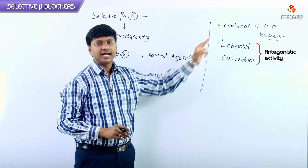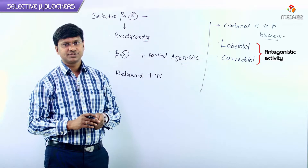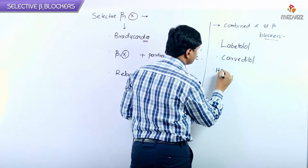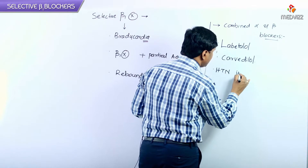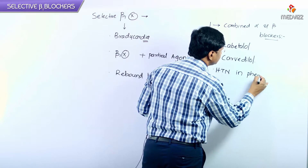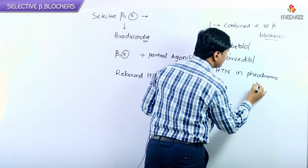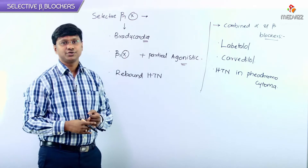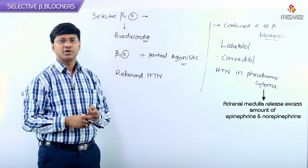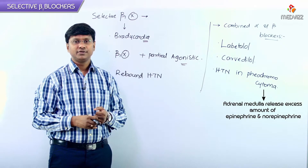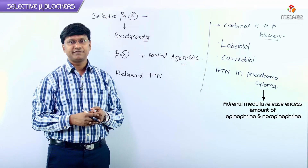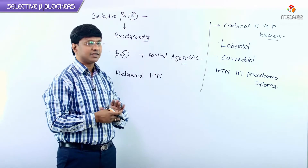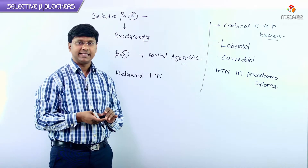They are mainly used in the control of hypertension in pheochromocytoma. Pheochromocytoma is a tumor originating from the adrenal medulla which releases excess amounts of epinephrine and norepinephrine. In that clinical scenario, we use the combined alpha and beta blocker, mainly labetalol.